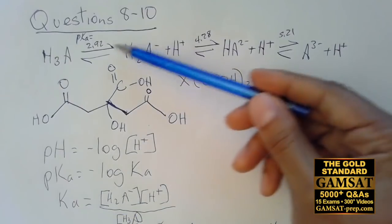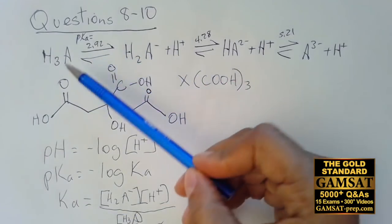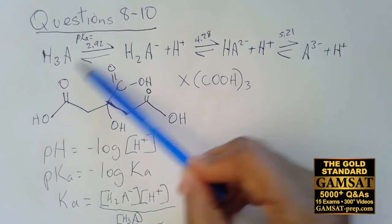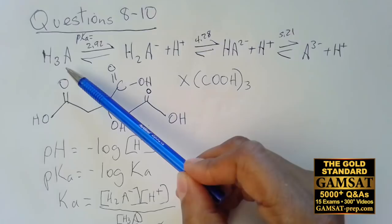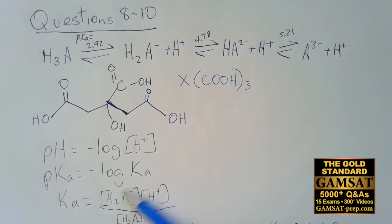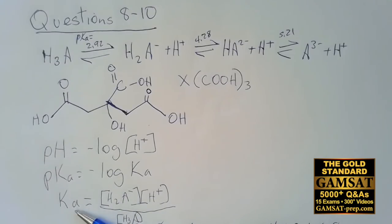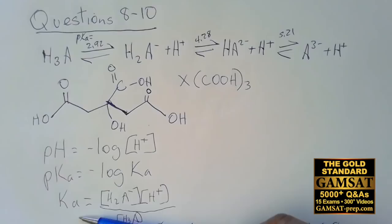Because an acid is a proton donor, if you donate a lot of protons the acid is strong, meaning you make a lot of product — that's the numerator — so Ka is high. Strong acid has high Ka, and because of the negative sign in the relationship between Ka and pKa, they are always opposite: high Ka means low pKa.